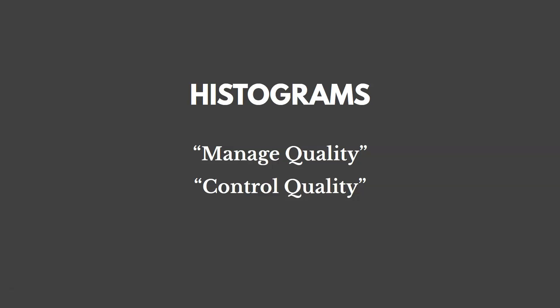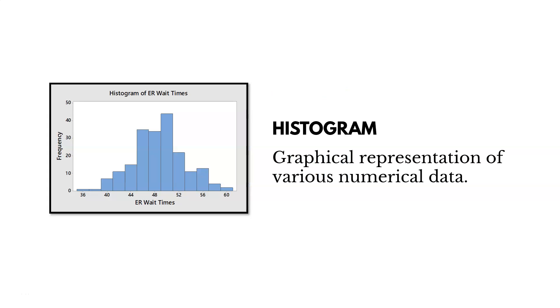We could also be using histograms in this chapter as a tool in Manage Quality and Control Quality. A histogram is a bar chart used to show central tendency, dispersion, and shape of a statistical distribution. We can break down a quality problem using histograms.